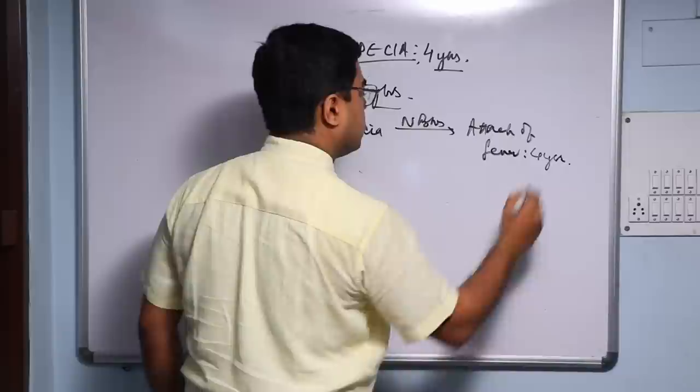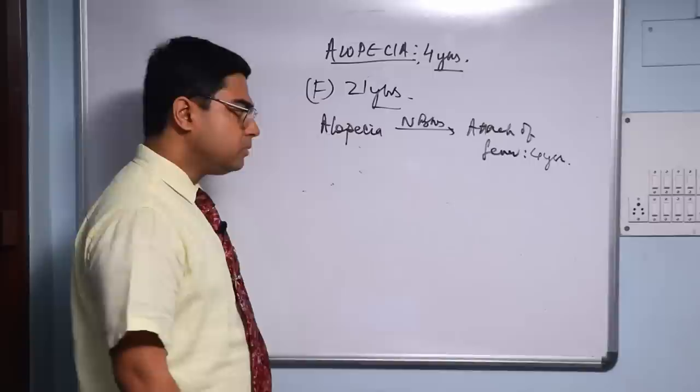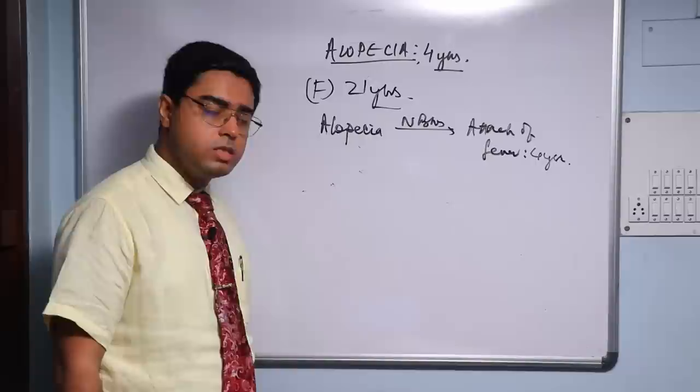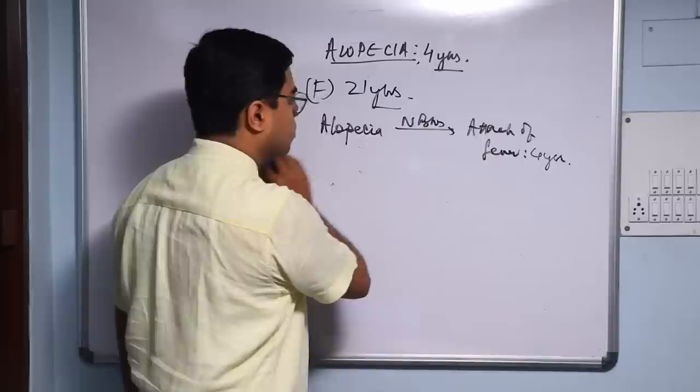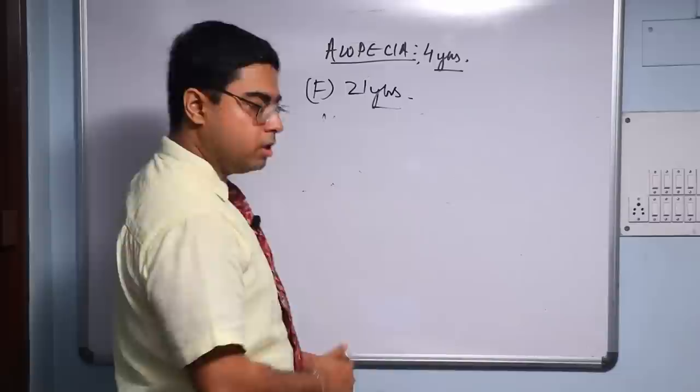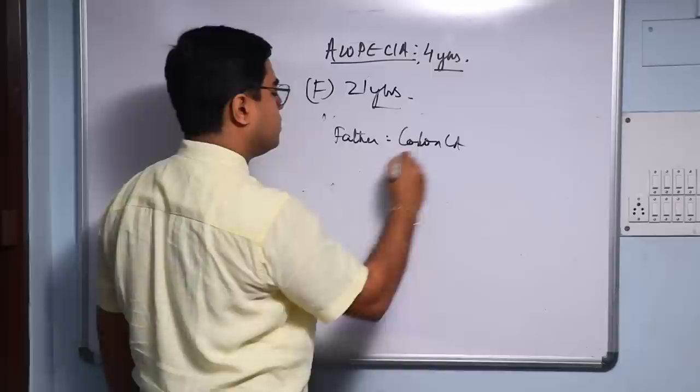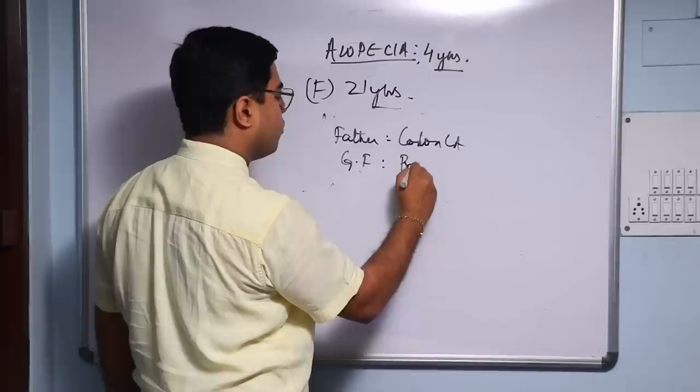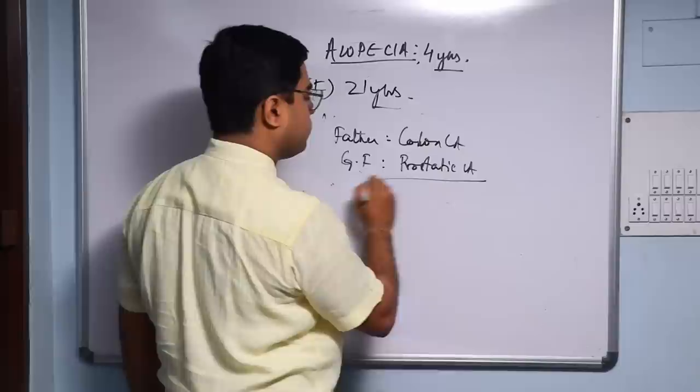In the past history, this attack of recurrent fever is important. She had a history of bleeding hemorrhoids which was treated homeopathically and that was gone. In the family history, father had died at a very young age due to colon cancer. There was asthma in the family, and the grandfather also had a history of prostate cancer.